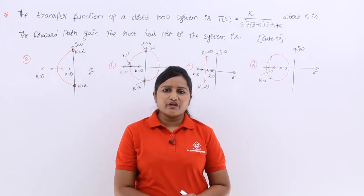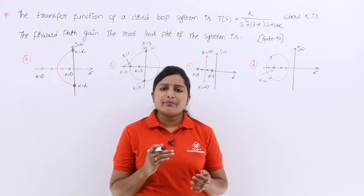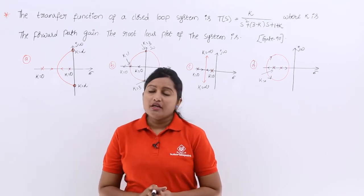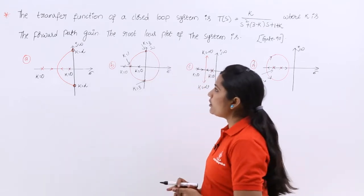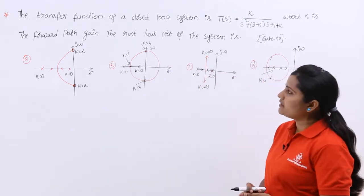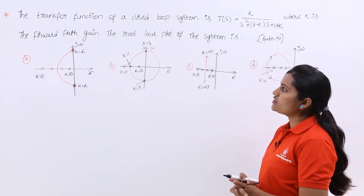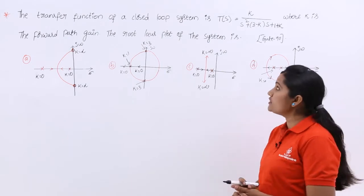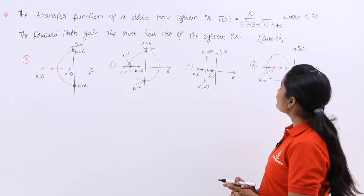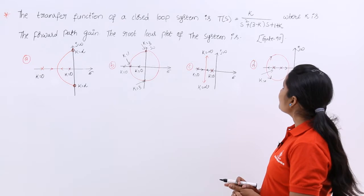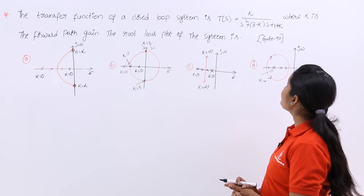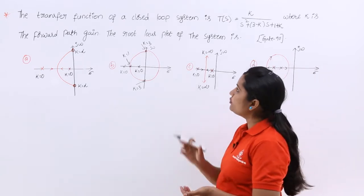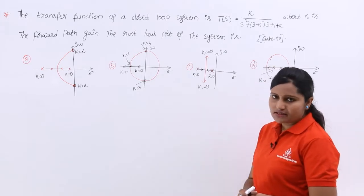In this video we are going to solve a previous Gate problem related to root locus. The problem is given in Gate 90. The transfer function of a closed loop system is T(S) = K / (S² + (3 - K)S + (1 + K)), where K is the forward path gain. The root locus plot of the system is asked.